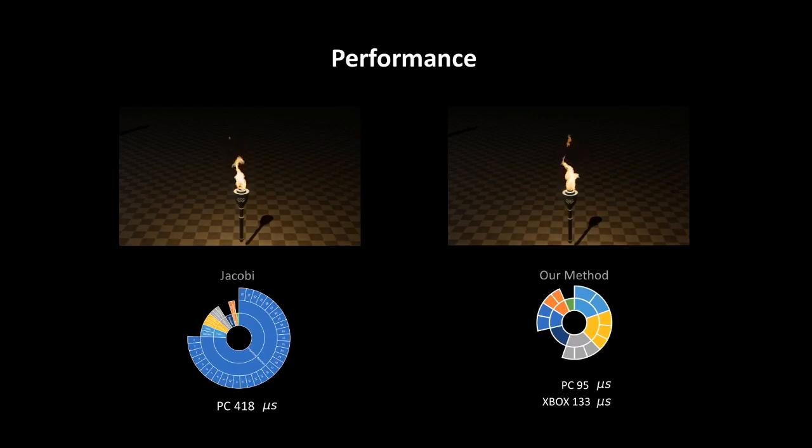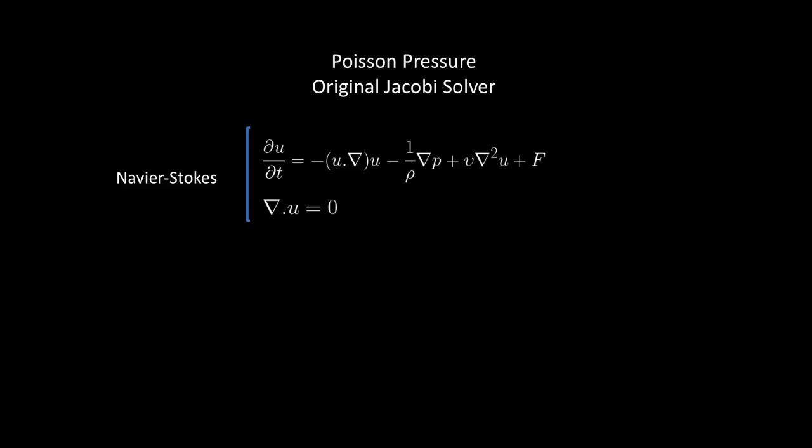Compared to Jacobi, our method achieves 20x faster projection and 4x faster pipeline, both on PC and Xbox, without any noticeable visual difference. Let's see how we do it.